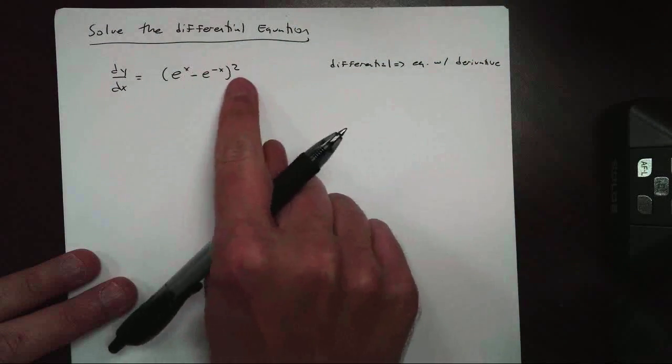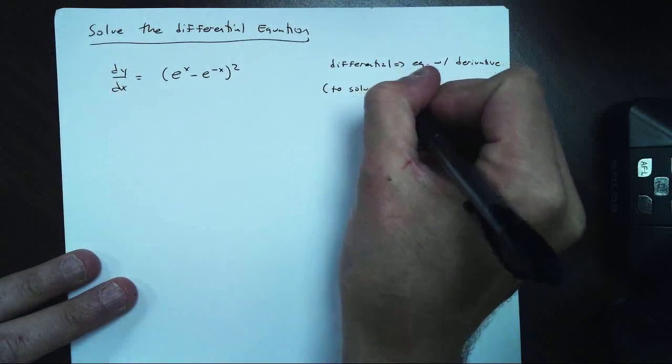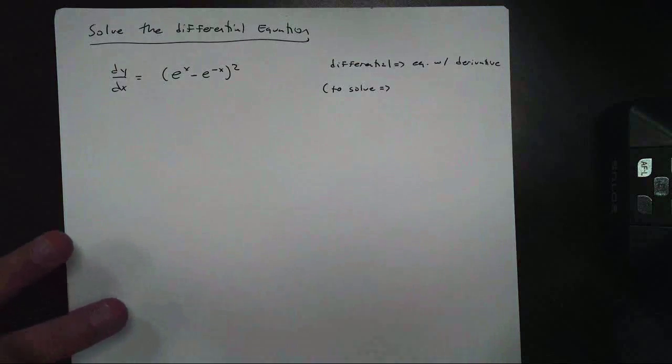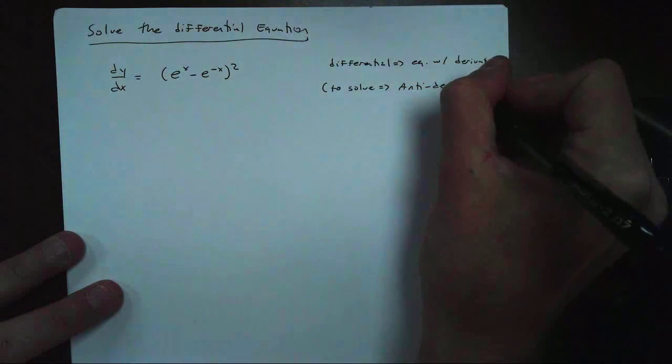What we're being asked to do is to solve it. So how do we solve? We use the anti, or the opposite of a derivative, which is the antiderivative. So we're going to use antiderivatives to solve this.